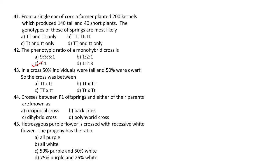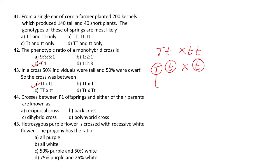Question 42: phenotypic ratio of monohybrid cross is 3:1. In a cross where 50 percent of individuals were tall and 50 percent were dwarf, the cross was between capital Tt × small tt. Capital Tt produces two gametes — capital T and small t — while small tt produces only small t gamete. Crossing gives capital Tt and small tt, so 50 percent tall and 50 percent dwarf. The answer is capital Tt × small tt.